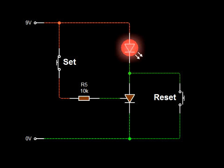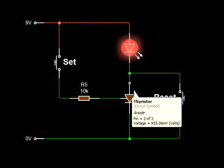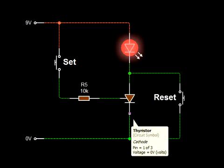Releasing the set switch stops the current flow into the thyristor. Here you can see there's no current movement, but the thyristor is allowing current into the anode and out of the cathode.